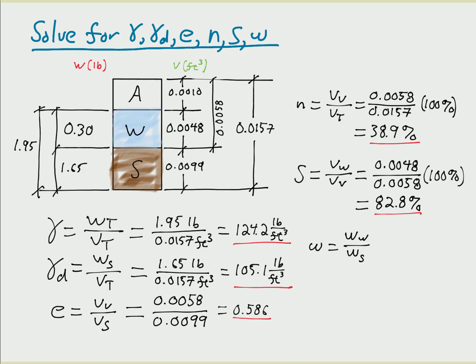Finally, we compute the moisture content, or water content, as the mass of water divided by the mass of solids. Like the void ratio, it is based on the quantity of solid material. For our specimen, this is 0.30 pounds divided by 1.65 pounds times 100%, or 18.2%. Remember to always use the three-phase diagram — it may be tempting to use equations directly, but you will learn faster and make fewer mistakes if you create a three-phase diagram first. I'm Professor Kitsch, and I hope you found this webcast helpful.